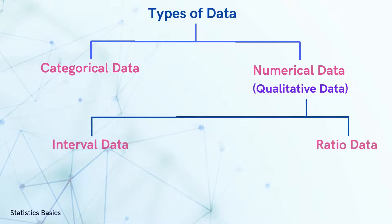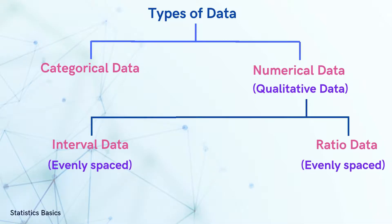Numerical data can be classified into two types based on their measurement scales, interval and ratio data. Both interval and ratio data have values that are ordered with consistent intervals, but the key difference lies in the zero point.